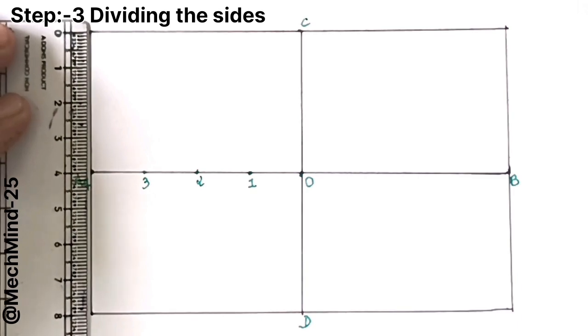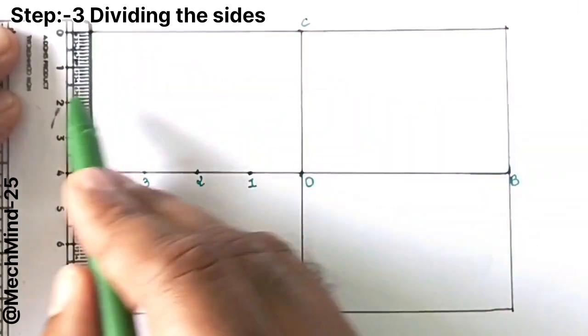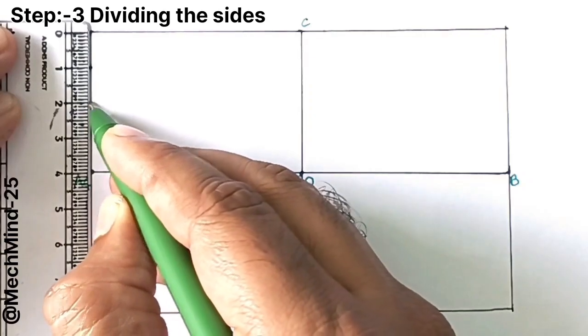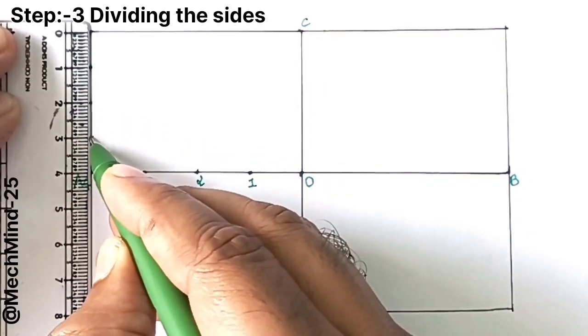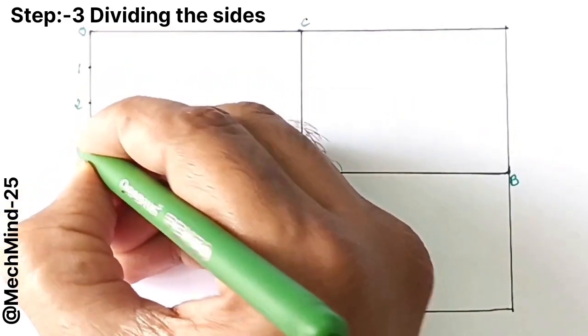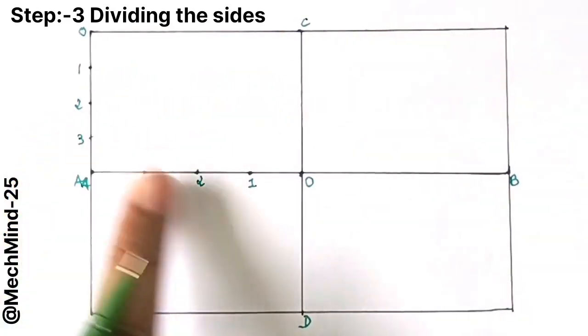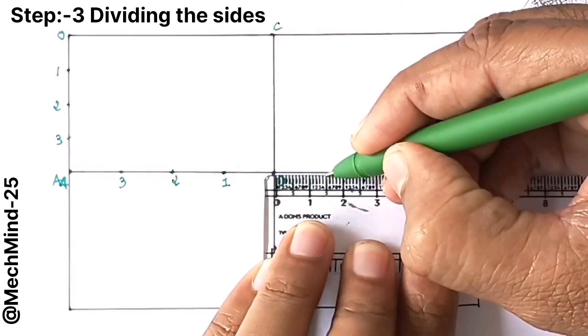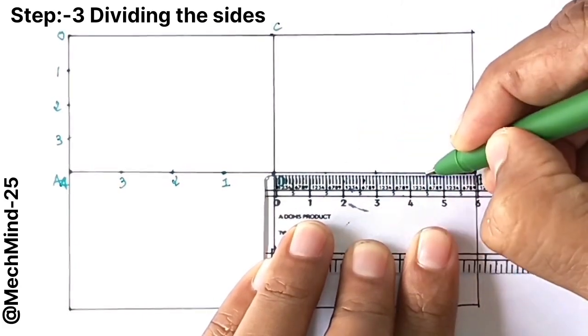Similarly, divide the vertical line which is 40 millimeter long into 4 equal parts of 10 millimeter each and mark them as 0, 1, 2, 3 and 4. Repeat the same process for the second sub rectangles on the opposite sides.